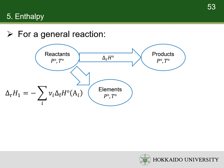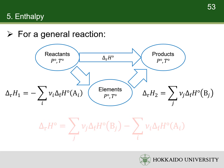The enthalpy of decomposing the reactants to the elements is the opposite of the sum of the standard enthalpies of formation of all the reactants. The enthalpy of forming the products from the elements is the sum of the standard enthalpies of formation of all the products. So the standard enthalpy of reaction is the sum of the standard enthalpies of formation of reactants and products multiplied by their stoichiometric numbers. Pay attention: the stoichiometric numbers of products are positive, and the stoichiometric numbers of reactants are negative.